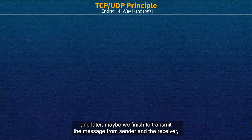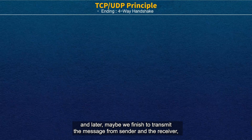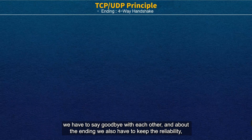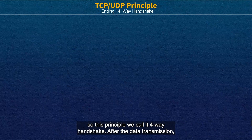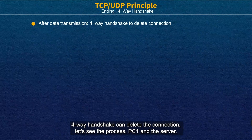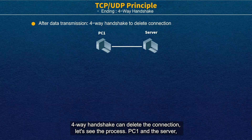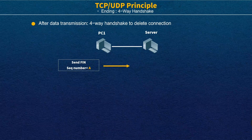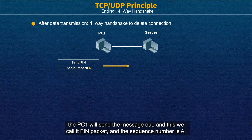When we finish transmitting the message between sender and receiver, we have to say goodbye to each other. About the ending, we also have to keep a reliable ending. This way we call it 4-way handshake. After data transmission, the 4-way handshake deletes the connection. PC1 will send out FIN packets with sequence number A.